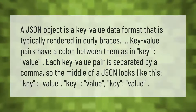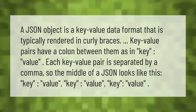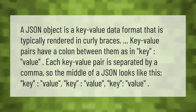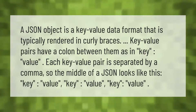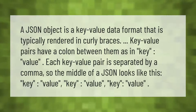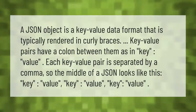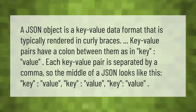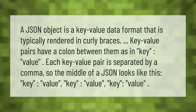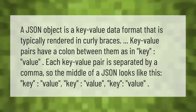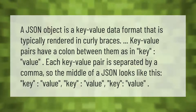A JSON object is a key-value data format that is typically rendered in curly braces. Key-value pairs have a colon between them, as in key:value. Each key-value pair is separated by a comma, so the middle of a JSON looks like this: key:value, key:value, key:value.